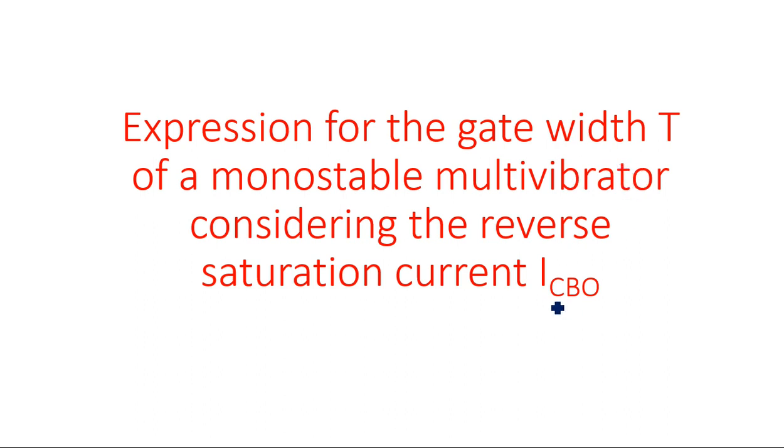Hi everyone. In this video I am going to explain the derivation for the gate width of a monostable multivibrator by considering the reverse saturation current ICBO. ICBO is the reverse saturation current when the emitter is acting as open circuited. In the previous expression, the gate width was calculated as T = 0.693 × RC, where this reverse saturation current was neglected. Now, the gate width will be calculated with the help of the reverse saturation current.